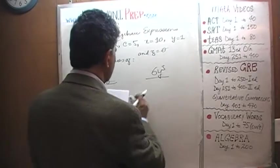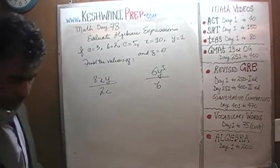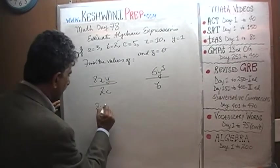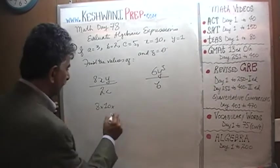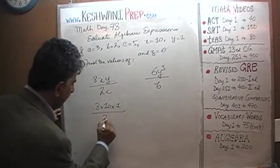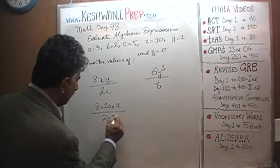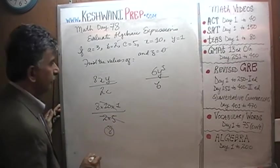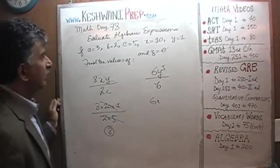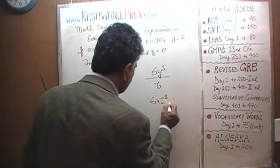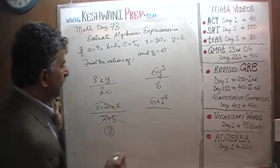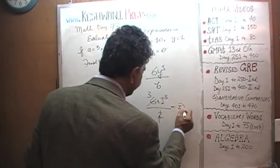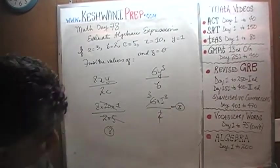8XY over 2C. Let's see what we can do. 8, X is 10, Y is 1 over 2 times C, C is 5. Well there you go, 2 times 5 is 10 so we can cross out this 10 with that 10. The answer is 8. 6 times Y cubed, well that's not going to do anything, it's just 1 cubed over B which is 2. So essentially it is just 6 divided by 2 which is 3.